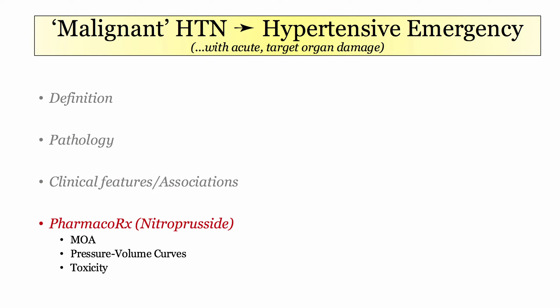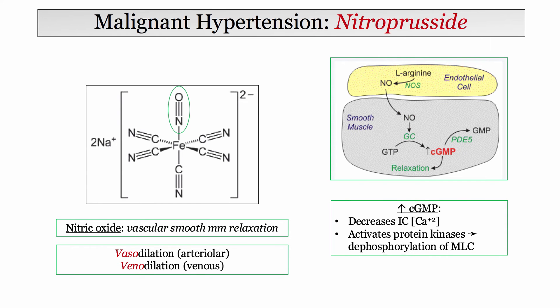We looked at the definition, pathology, and key associations with malignant hypertension. Now we have to treat it. The treatment is nuanced, and this is the setting in which you will see nitroprusside questions. The left side of the graphic demonstrates the nitroprusside molecule — note it has a nitric oxide side chain. Nitric oxide is associated with smooth muscle relaxation. Whereas nitroglycerin is primarily a venodilator, nitroprusside is both a venodilator and a vasodilator.